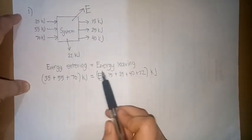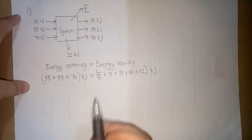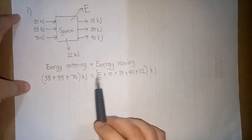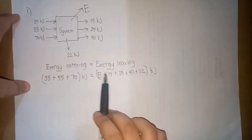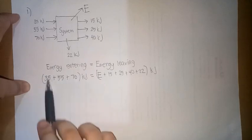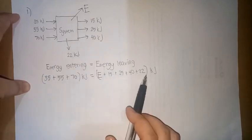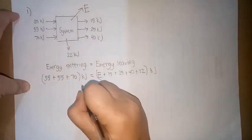Lahat sila may unit na kilojoules. So ibig sabihin, ang magiging unit ni E is kilojoules. So how do we solve for E? So imamanipulate lang natin itong equation, getting the sum of this, then transpose lang natin itong 4, makukuha natin si E.